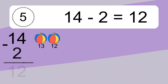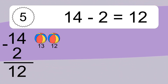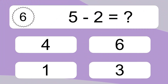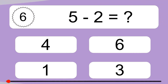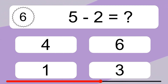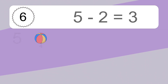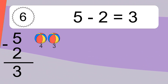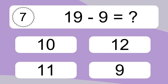14 minus 2 equals what? 14 minus 2 equals 12. Let's count it: 13, 12. 5 minus 3 equals what? 5 minus 3 equals 3. Let's count it: 4, 3.